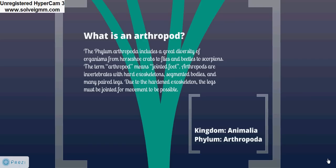What is an arthropod? The phylum Arthropoda includes a great diversity of organisms, from horseshoe crabs to flies, and beetles to scorpions. The term arthropod means jointed foot. Arthropods are invertebrates with hard exoskeletons, segmented bodies, and many paired legs. These defining characteristics provide many advantages and allow for nearly endless variations and adaptations to unique habitats and lifestyles.